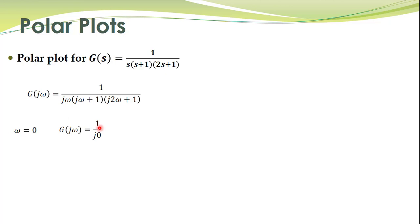We can write this complex number in polar form. The magnitude of this complex number is 1 divided by 0, which is infinity, and the angle is minus 90 degrees. So corresponding to omega equal to zero, G(jω) equals infinity at angle minus 90 degrees.